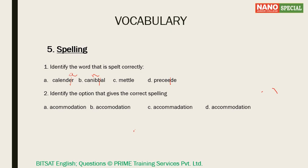The second type of spelling question: a single word is given spelt in four different ways and you have to find the correct spelling. For example, the first option has a single C — not right. The second has a single M — not right. The third has an incorrect A. So the correct answer is D. For spelling preparation, there are frequently misspelled words, and we have a list of those — our first chapter in the Nano material is on spellings. Spend some time on that list, be thorough, and most of the questions will come from that chapter.